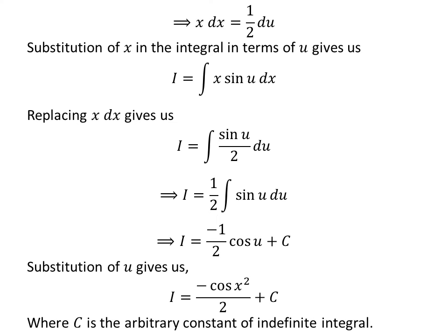Let us substitute u in terms of x. As we had assumed u is equal to x squared. So I, the integral of x times sine of x squared, is equal to minus half of cosine of x squared plus capital C.